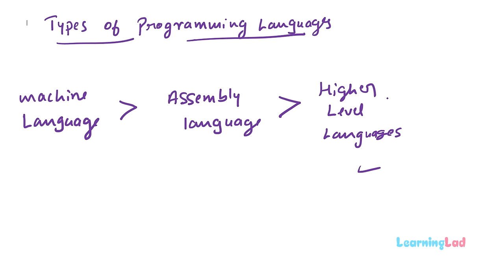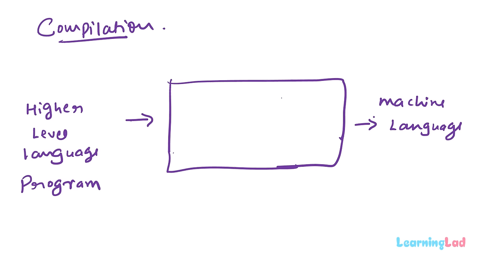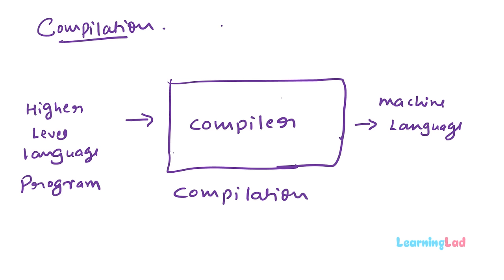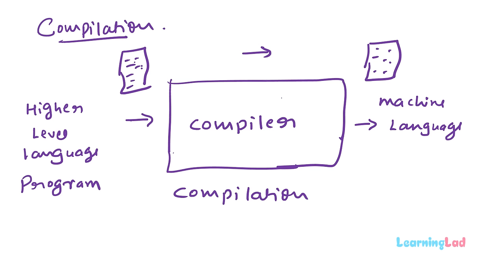Let's look at the compilation method in detail. A program called a compiler is used, and this compiler takes the higher level language program and converts it to machine language — this process is called compilation. The compiler reads the entire high level language program, converts the whole thing to machine language, and then that machine language code is executed.